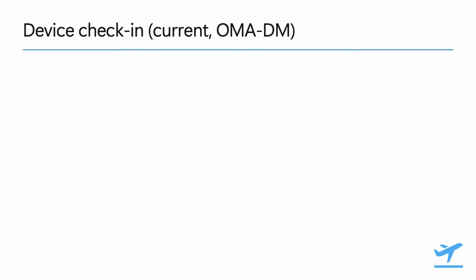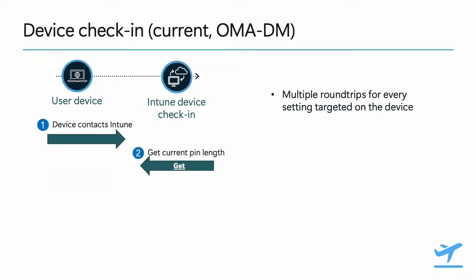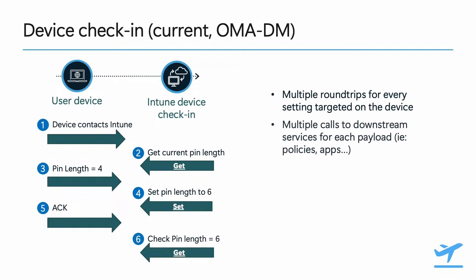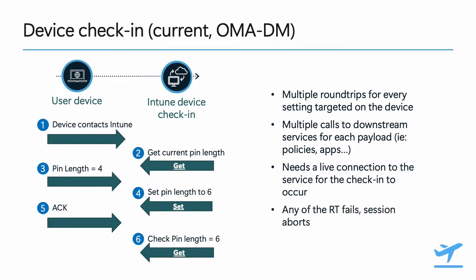To explain what Declarative Device Management is and how it's going to turn the latency conversation on its head, we need to talk about how the current 15-year-old OMA Device Management protocol works. Imagine an admin making a single policy change, like changing the complexity of the user password. In the current device check-in model, there are multiple round trips between the device and Intune to retrieve, apply, and verify each of those settings. In some cases, like scripts or apps, the check-in process also needs to call other downstream services — sometimes even outside of Intune — to retrieve all relevant metadata and configuration. This back and forth requires a live, uninterrupted connection between the device and Intune for several minutes, and if any of those round trips fails, the entire check-in session will fail and require another check-in to complete the changes.